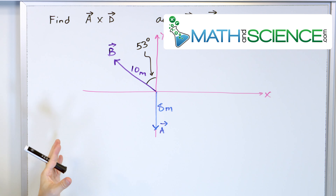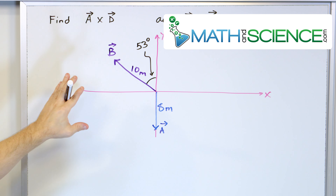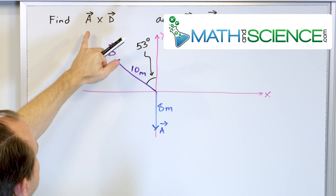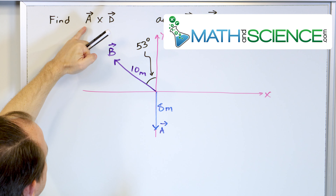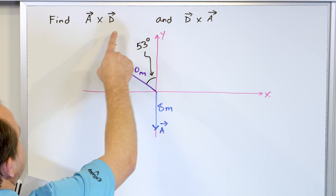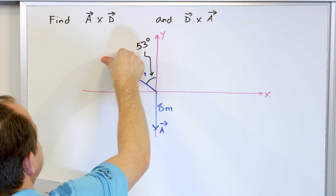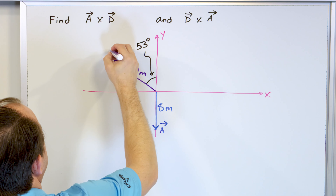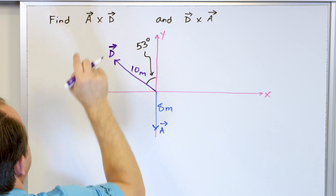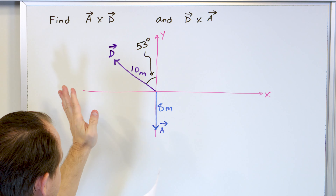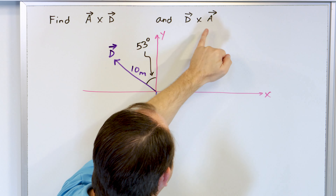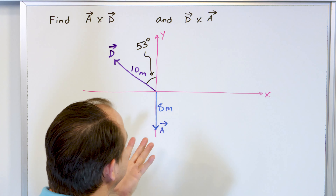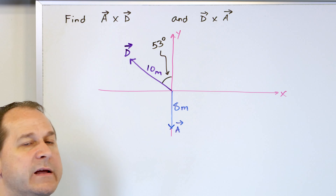We're going to take a look at this diagram. We have two vectors labeled on the board, and the problem is very simple. I want to calculate the cross product A crossed with D. I've already mislabeled something — this is actually vector D, not vector B. So we're taking the cross product A cross D, and then we're going to take the cross product D cross A, crossing them in opposite order, and see what we get.